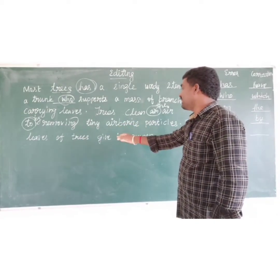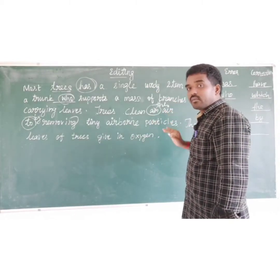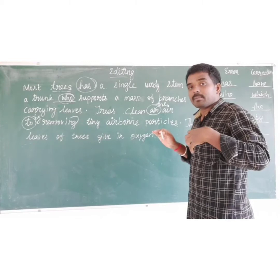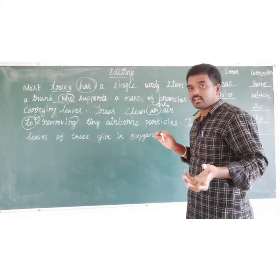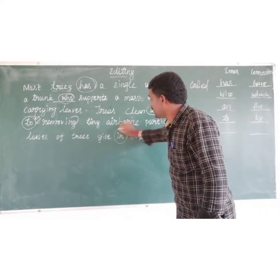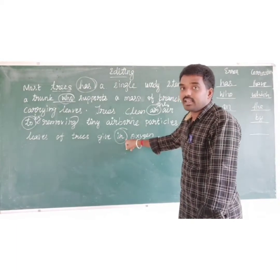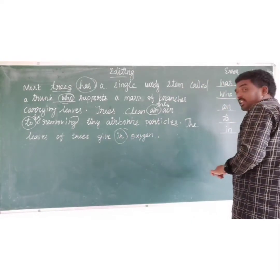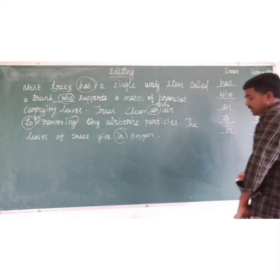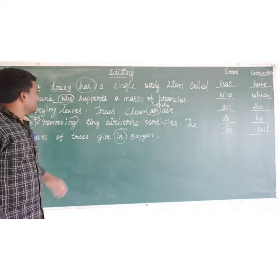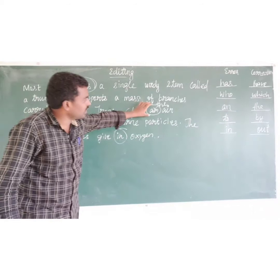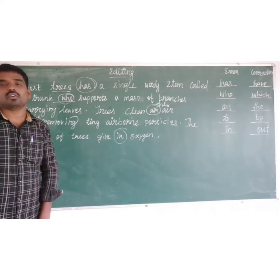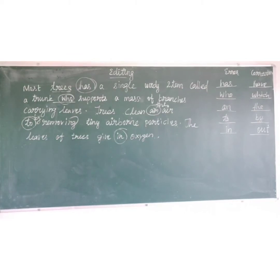The last line: 'The leaves of trees give in oxygen.' This is a very easy one. Plants take in carbon dioxide and breathe out oxygen — not 'in' oxygen, but 'out' oxygen. So 'give out oxygen'. The error is 'in' and the correction is 'out'. Summary of this example: first — tense, second — relative pronoun, third — article, fourth — preposition, fifth — preposition. We want to give importance to all grammar rules.